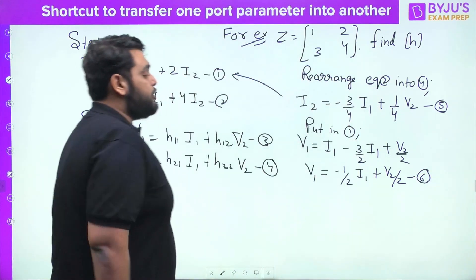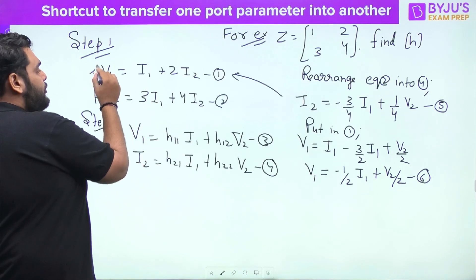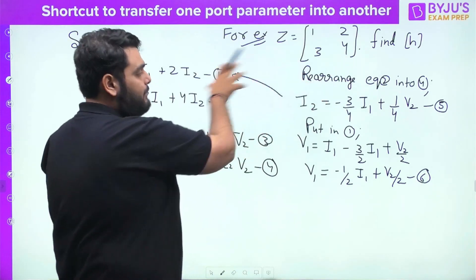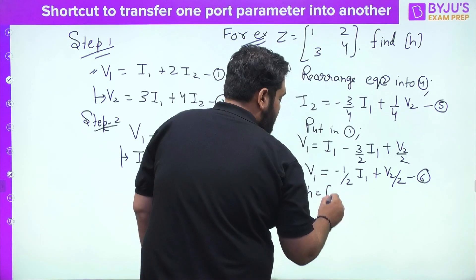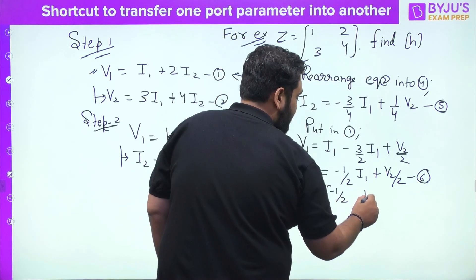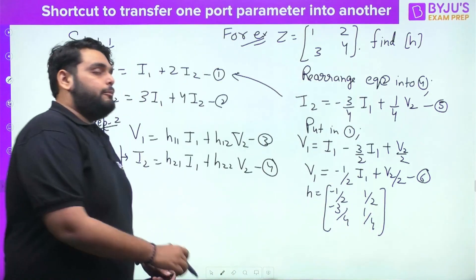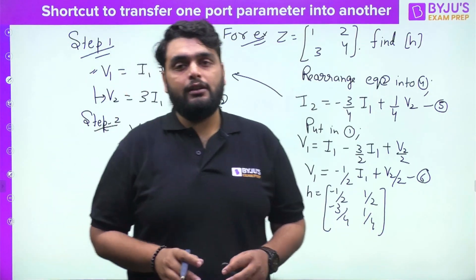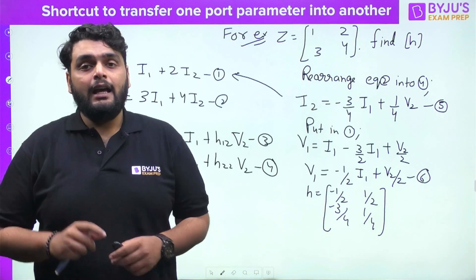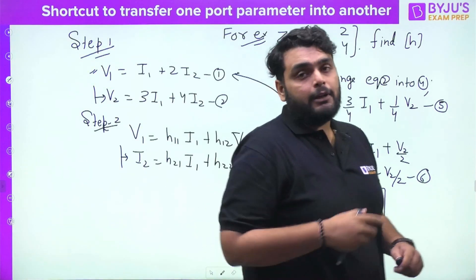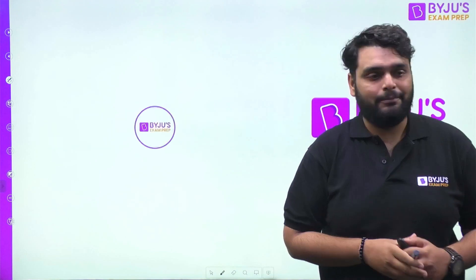These two equations — equation 5 (V1 = −1/2·I1 + 1/2·V2) and equation 6 (I2 = −3/4·I1 + 1/4·V2) — give you the H parameter. So the H parameter matrix is [−1/2, 1/2; −3/4, 1/4]. In this simpler way you can easily transfer one parameter into another form. This shortcut is very useful and much easier than remembering all the formulas. Bye, take care — we will meet soon in the next shortcut trick method.